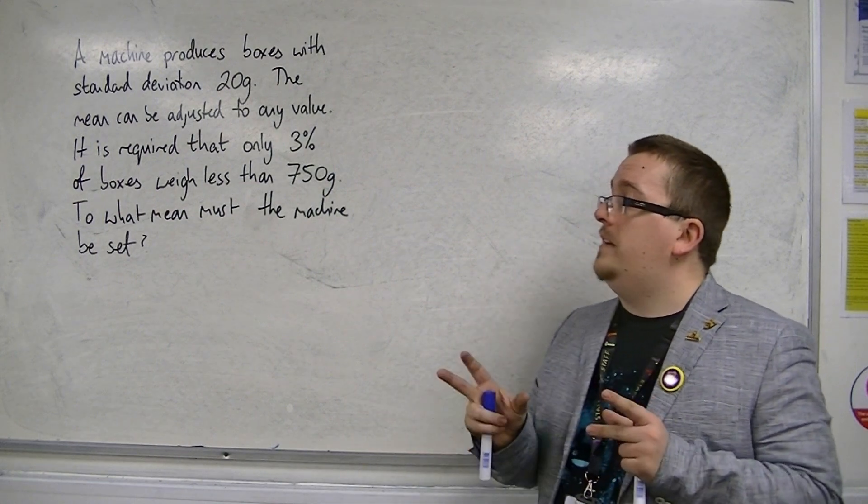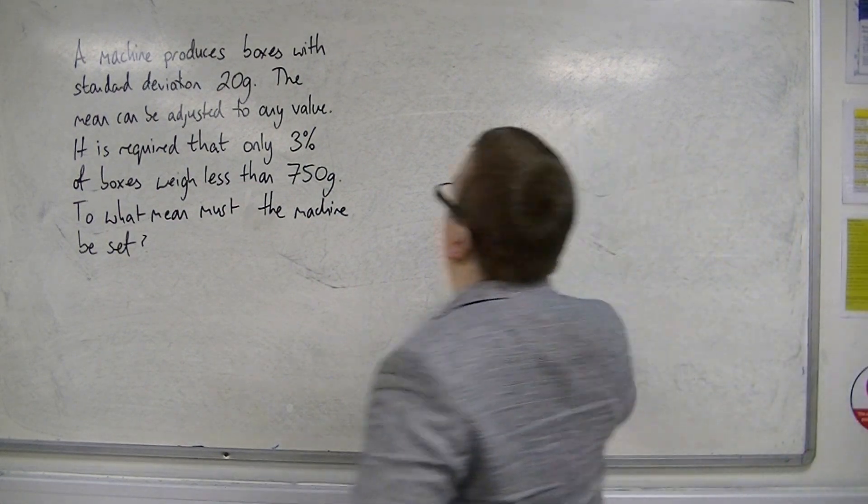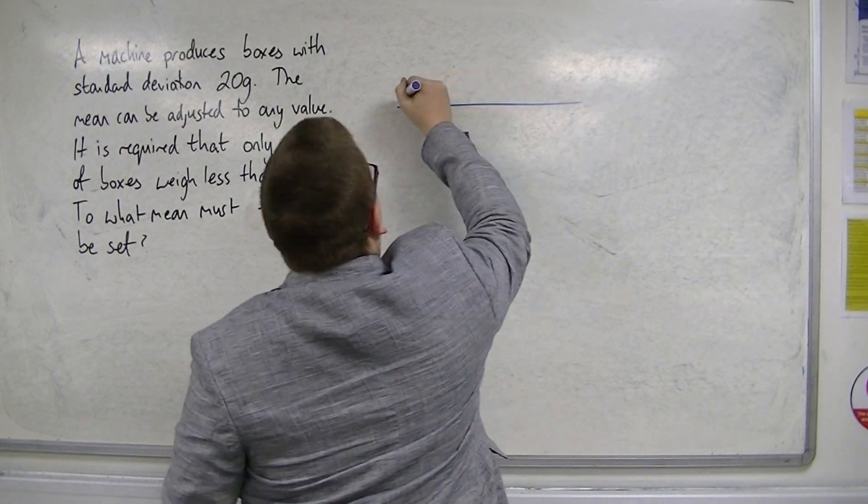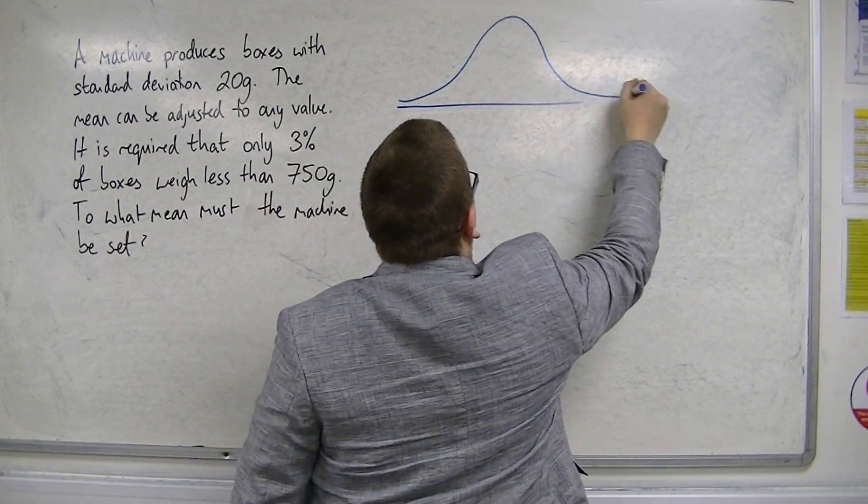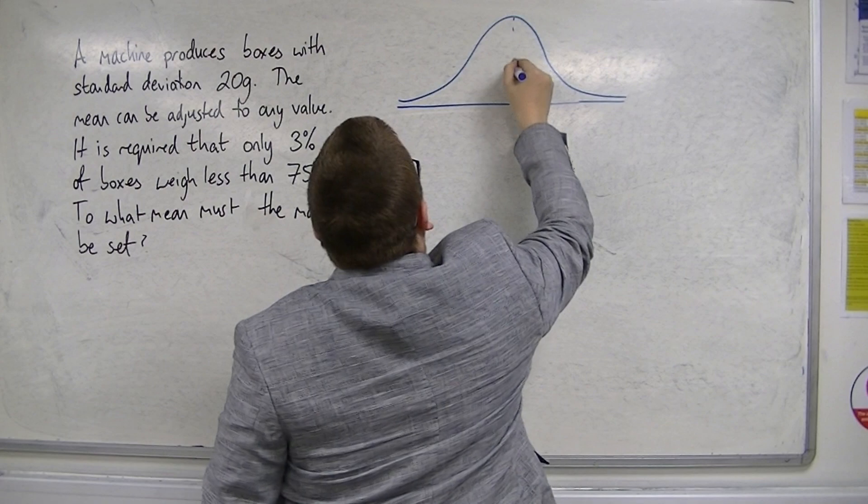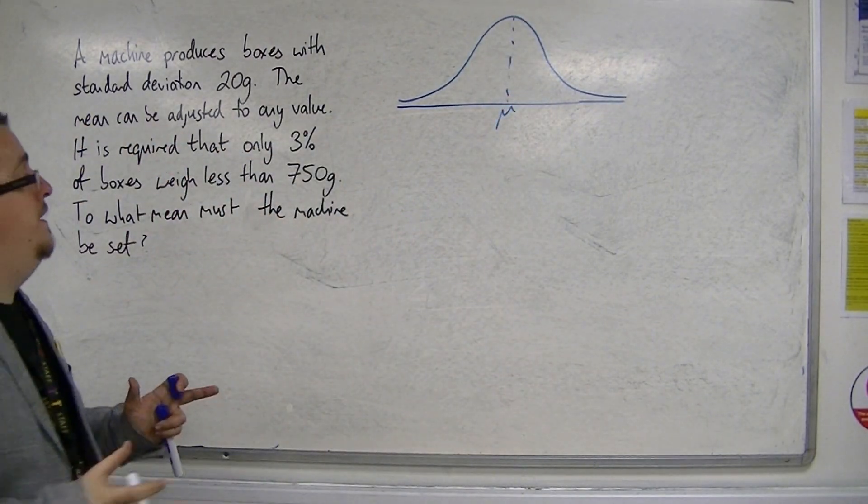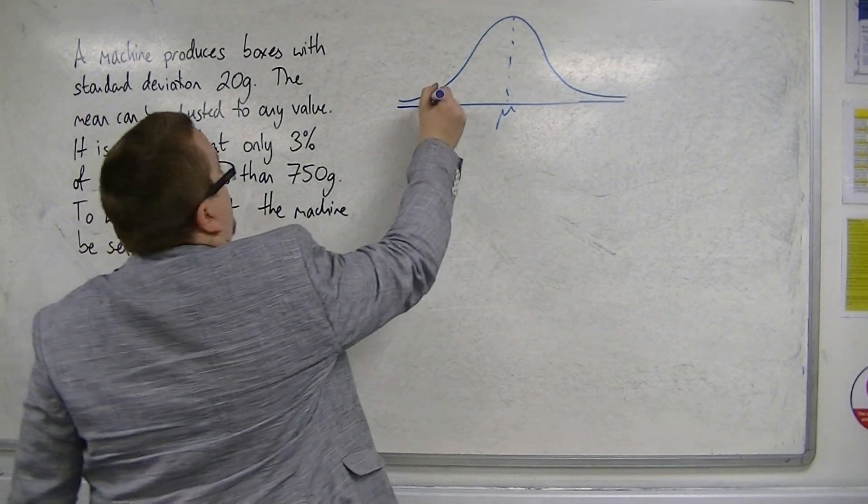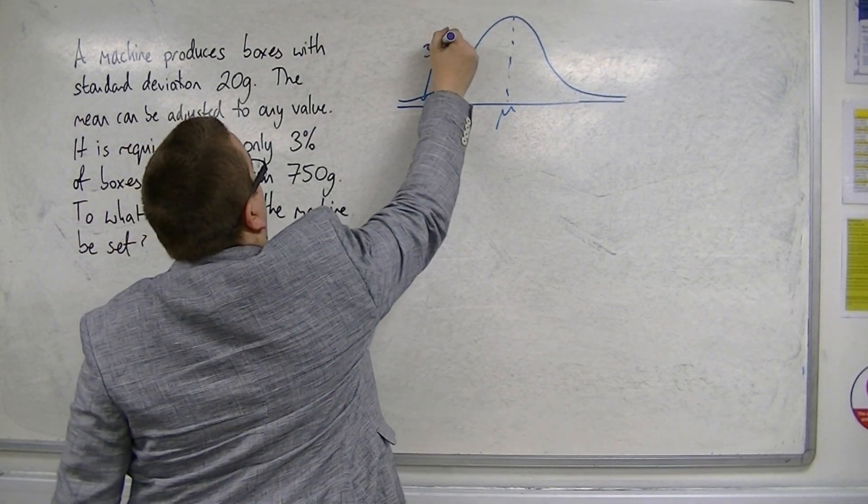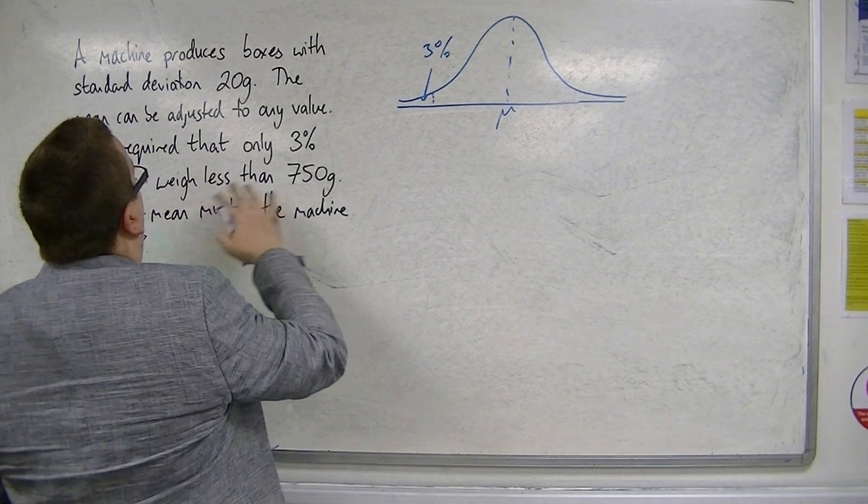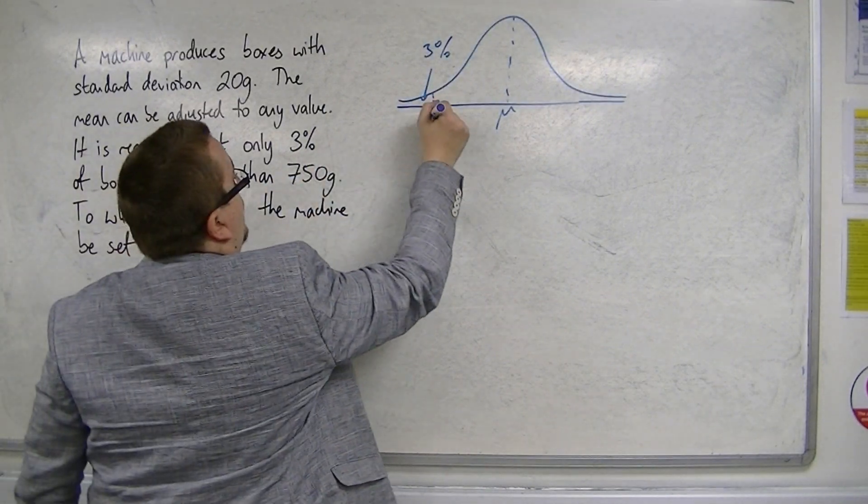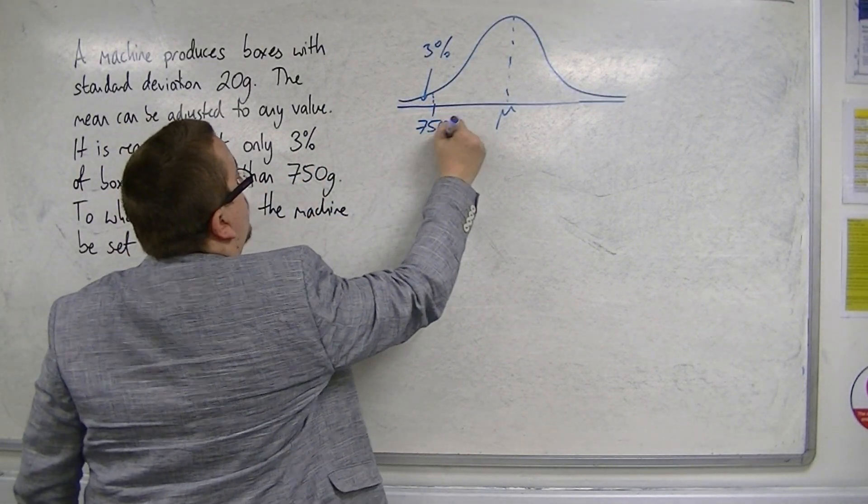To what mean must the machine be set? If we draw a diagram for this, we have this mean value that we don't currently know. That's what we need to find. But we do know that we want 3% to be less than 750 grams.